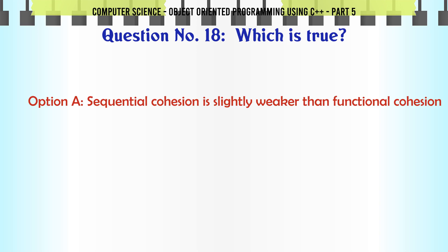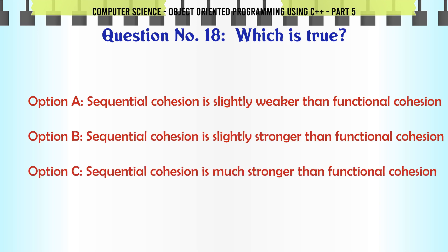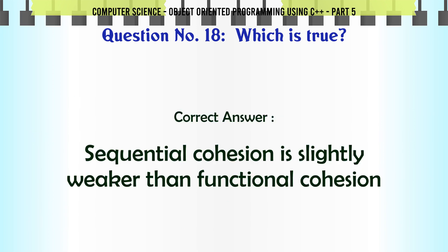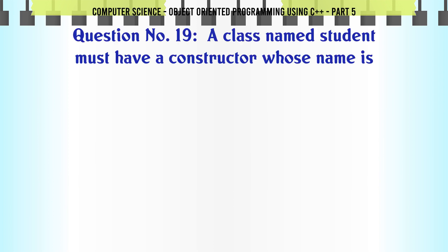Which is true? A. Sequential cohesion is slightly weaker than functional cohesion. B. Sequential cohesion is slightly stronger than functional cohesion. D. Neither sequential cohesion nor functional cohesion is stronger than the other. The correct answer is: Sequential cohesion is slightly weaker than functional cohesion.